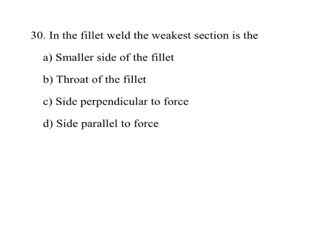In a fillet weld, the weakest section is the throat of the fillet — not the smaller size of the fillet. B is the answer.